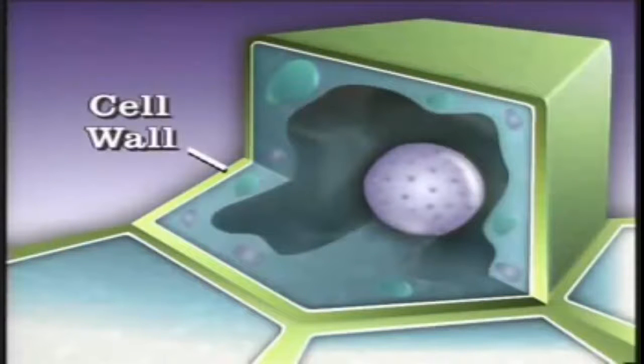But plant cells are different from animal cells in other respects. Plant cells, like animal cells, have a cell membrane, but they also have a thick cell wall surrounding this membrane.